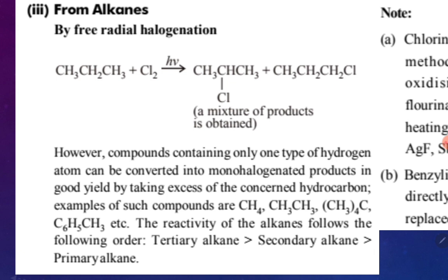In conclusion: whenever you react alkanes with halogens in the presence of hν, you get alkyl halide — hydrogen is replaced by halogen (substitution). This reaction follows free radical mechanism. Reactivity order: 3° > 2° > 1° (based on free radical stability). Reactivity of halogens: fluorine is most reactive, iodine is least reactive.